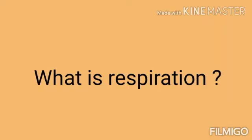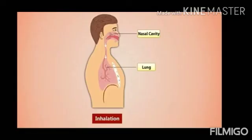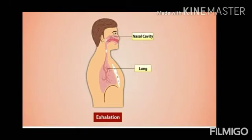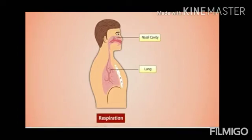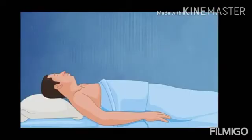Now students, let's see what is respiration. We breathe in air through our nose — that is inhalation. We breathe out air through our nose — that is exhalation. Inhalation and exhalation together are called breathing. We breathe continuously, and that is called respiration. We also inhale and exhale during sleep, and so we can see a sleeping person's chest moving up and down.